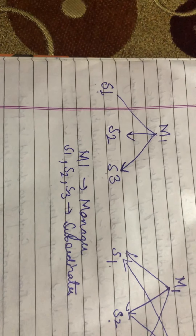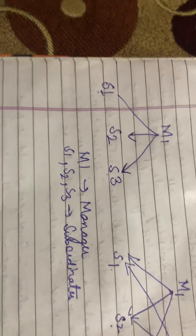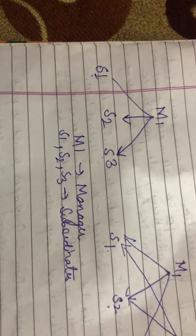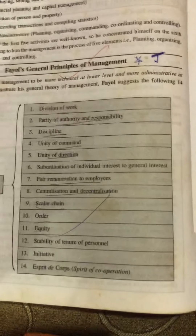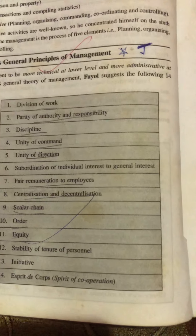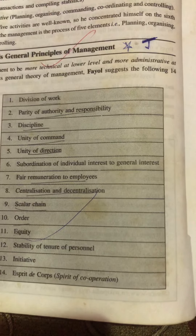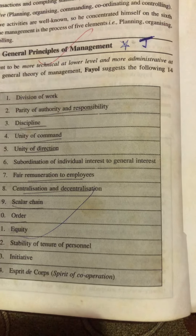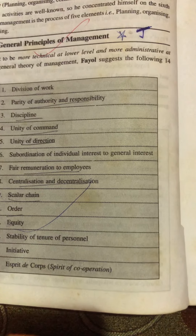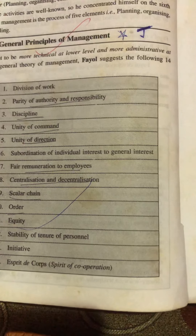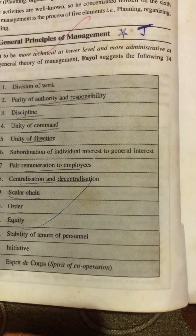An employee should receive orders from only one superior at a time. The next point is unity of direction. Unity of direction means one head and one plan. For example, all marketing activities such as advertising and sales promotion must be directed by only one manager.